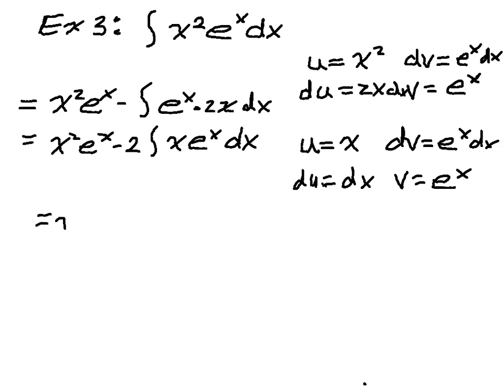This tells me that du is dx, and that v is e to the x. So now, I have x squared e to the x minus 2, the quantity, uv, x e to the x minus the integral of v, which is e to the x, du. And I'm almost done.